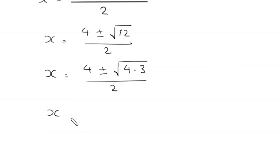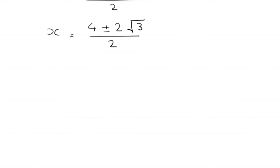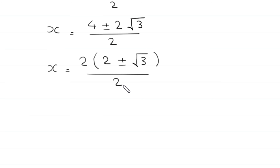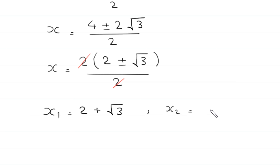This gives x equals 4 plus or minus square root of 16 minus 4, divided by 2, which is 4 plus or minus square root of 12 divided by 2. The square root of 12 is 2 times square root of 3. Factoring 2 from the numerator, we get 2 times 2 plus or minus square root of 3, divided by 2. The 2s cancel, giving x₁ equals 2 plus square root of 3, and x₂ equals 2 minus square root of 3.